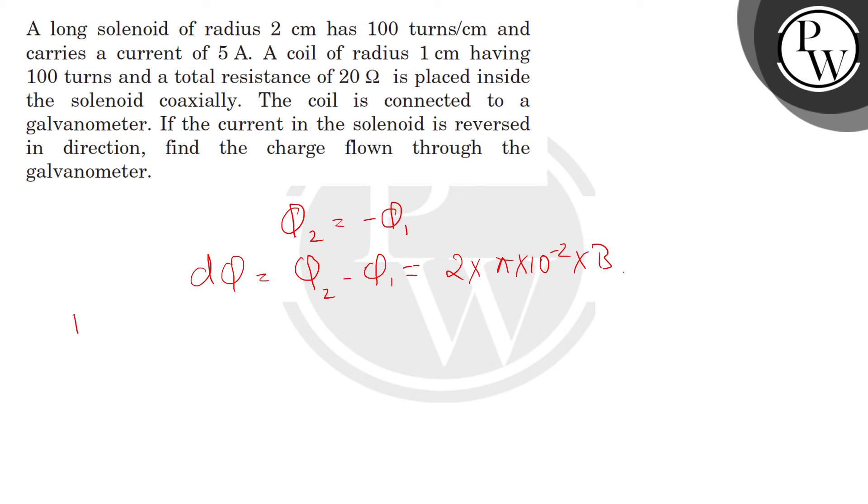Now the EMF induced equals dφ/dt which equals 2π × 10⁻² × B/dt. We don't know the time yet. And current we get from Ohm's law, that is E/R, and that we get π × 10⁻² × B/(dt × R) and we know the value of R and that is 20.